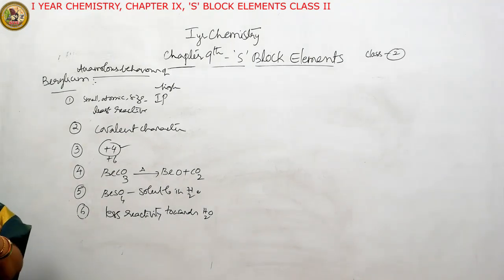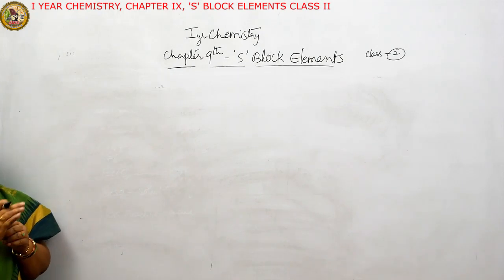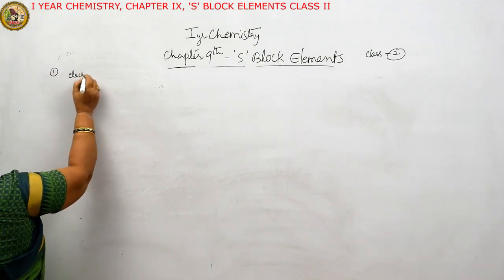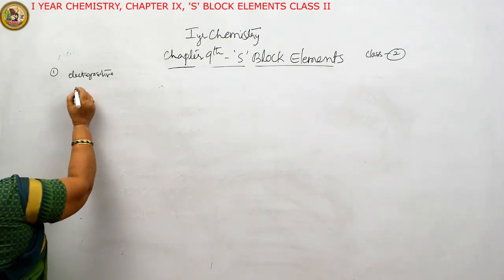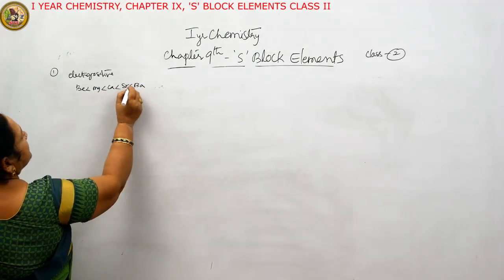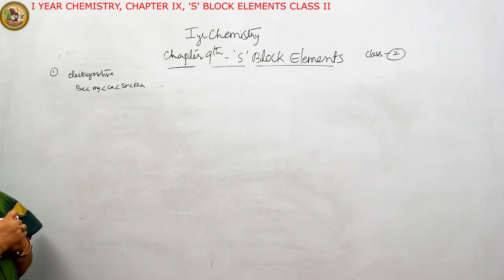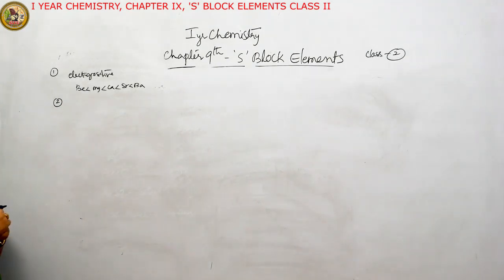Now we shall see the chemical properties of alkaline earth metals. First point: these are highly electropositive elements. The order of reactivity is: beryllium < magnesium < calcium < strontium < barium. As they are highly electropositive, they give off two electrons and enter into reactions. That's why they act as reducing agents, but less compared to first group elements. Almost all of them give colors in the flame test.